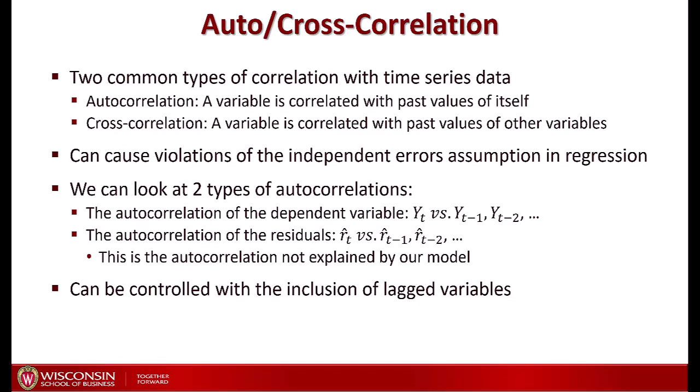There are two types of specific correlation patterns often found in time series data. The first is autocorrelation: when a variable is correlated with past values of itself. For example, the weather today might be correlated with the weather yesterday. The second is cross-correlation: when a variable is correlated with past values of other variables. For instance, today's sales might be correlated with advertising from the week before, because people see an ad but take a week to make the purchase.